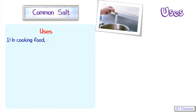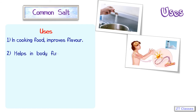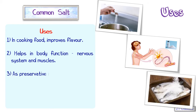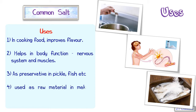The first use of common salt is in cooking to improve flavor. Second, it helps in body function — especially, sodium ions are required for the nervous system and muscles to function. Third, it is used as a preservative. Fourth, and most important for us, it is used as a raw material for making different chemical products. These different chemical products are what we will study ahead.